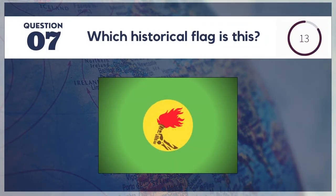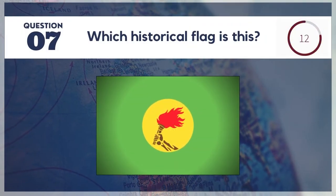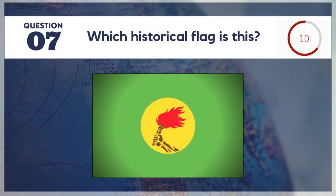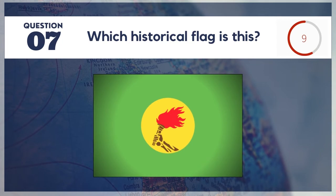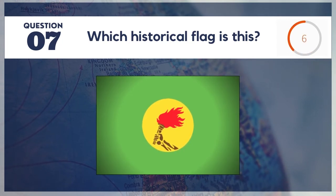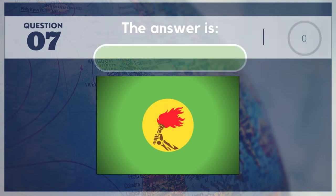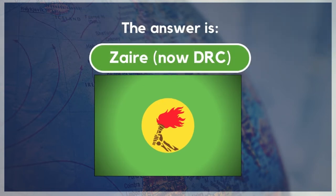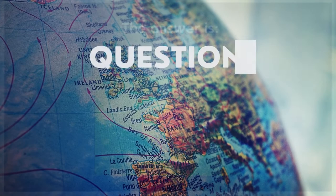Question 7. Which historical flag is this? This was the flag of Zaire, now known as the Democratic Republic of the Congo.